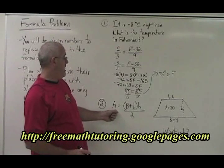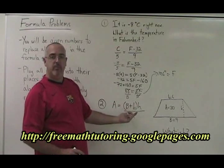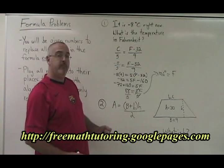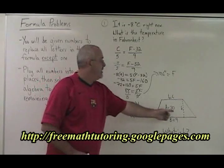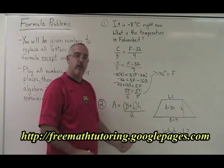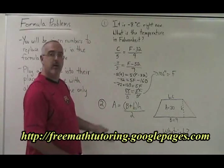In example 2, we have A equals brackets big B plus little b times H over 2. We are given A equals 30, little b equals 6, and big B equals 9 in this diagram. They are asking, what is H? So we replace the letters with all the numbers we were given.